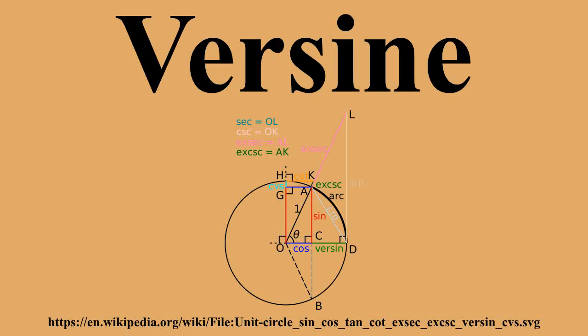The versine is a trigonometric function already appearing in some of the earliest trigonometric tables. The versine is 1 minus its cosine.